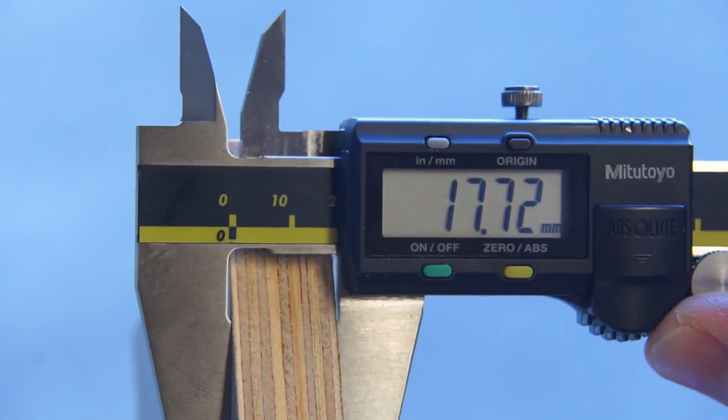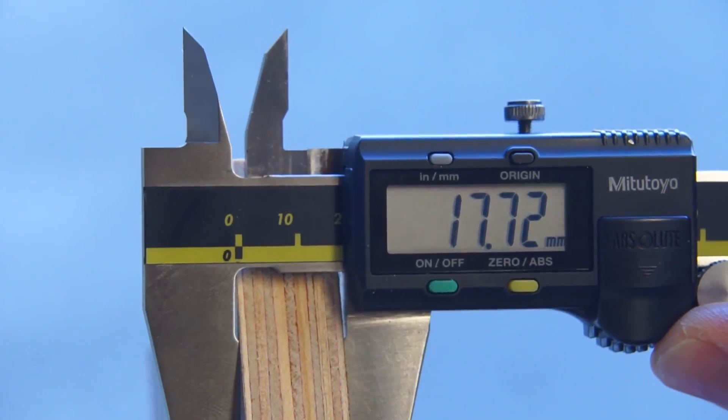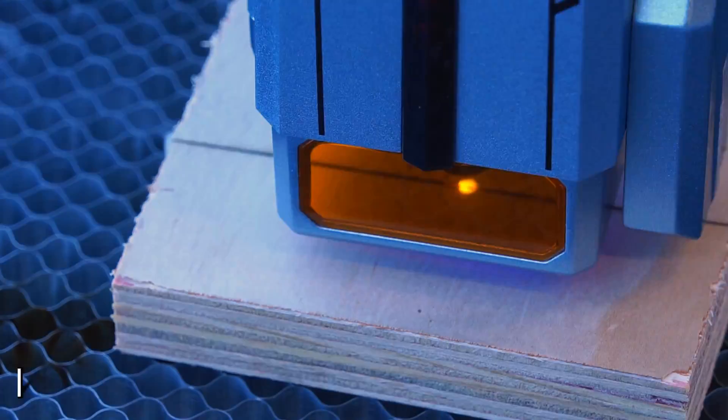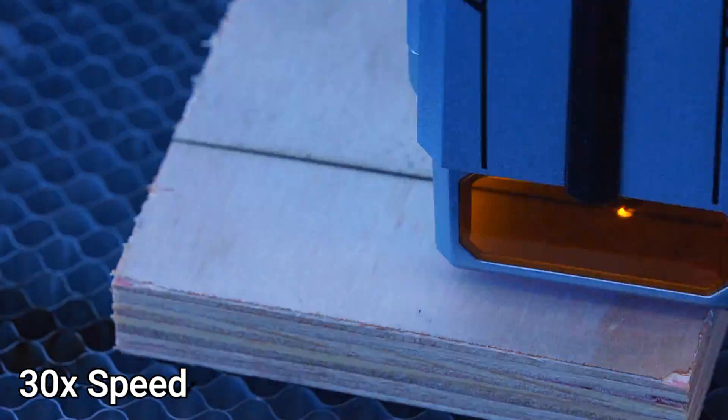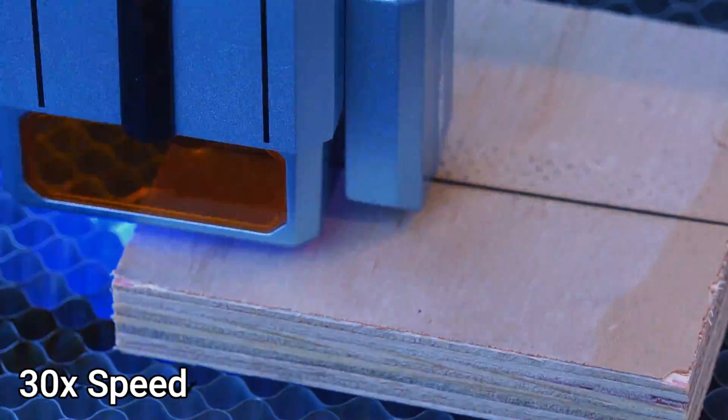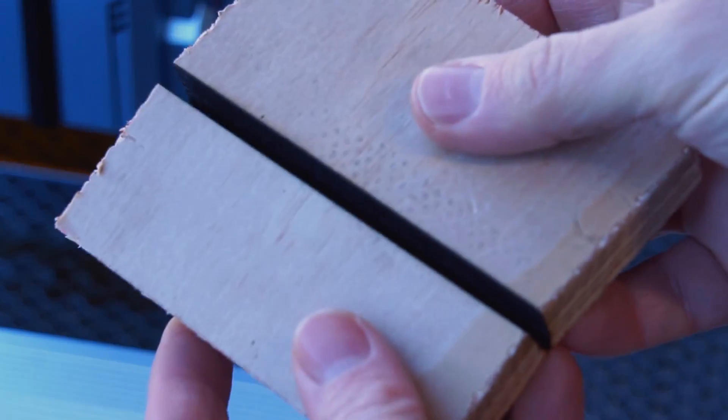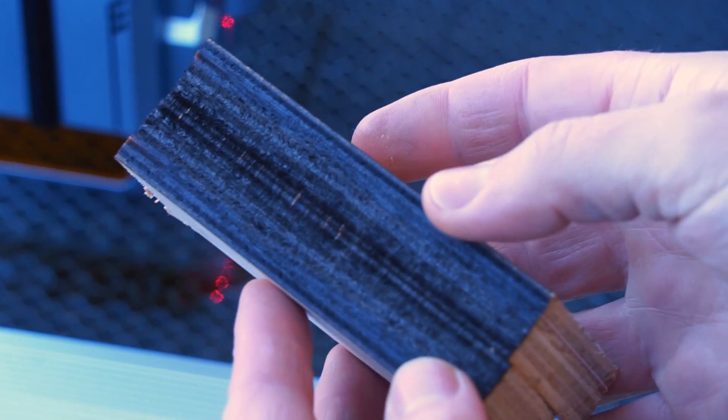Up next I grabbed some not quite 18mm plywood and programmed the laser to do 14 passes at 90% power at 10mm per second travel. If you ask me, cutting 18mm plywood with a diode laser machine this fast is pretty impressive.